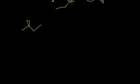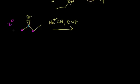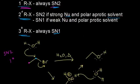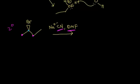For the next example, we have a secondary alkyl halide with a bromine — notice stereochemistry is involved. We're going to react it with sodium cyanide (Na⁺ CN⁻) and the solvent is DMF. We look at the structure first: this carbon is connected to two other carbons, making it a secondary alkyl halide, which can proceed via SN1 or SN2. The nucleophile is cyanide anion, which is a relatively strong nucleophile, and DMF is a polar aprotic solvent. Strong nucleophile plus polar aprotic solvent means SN2.